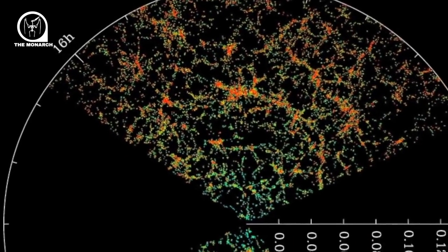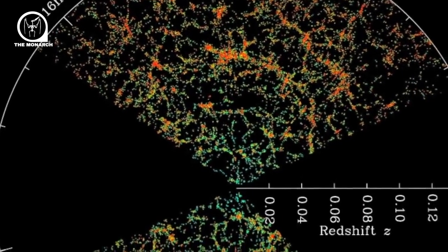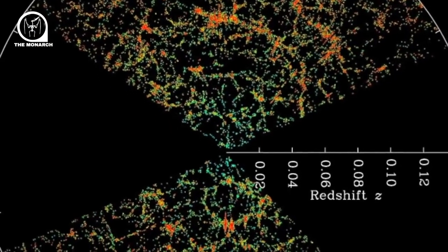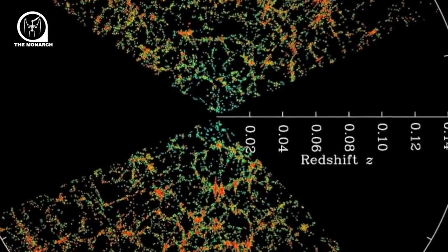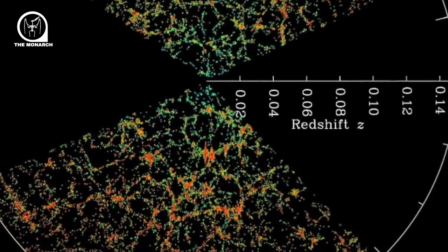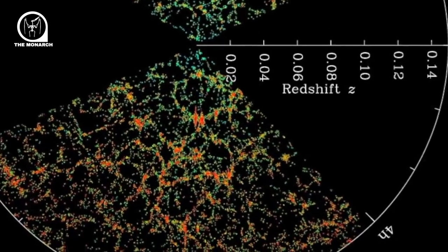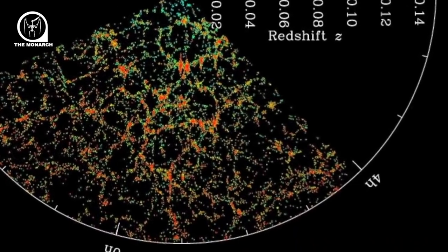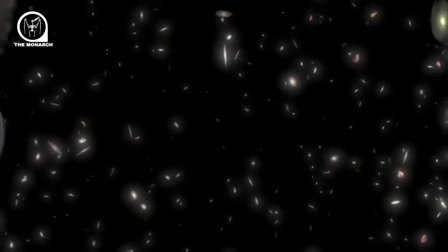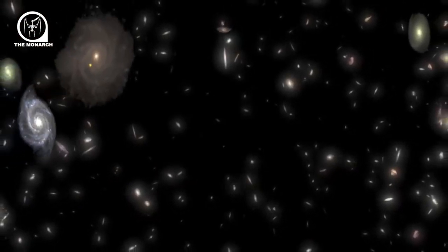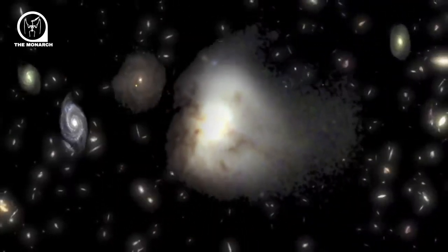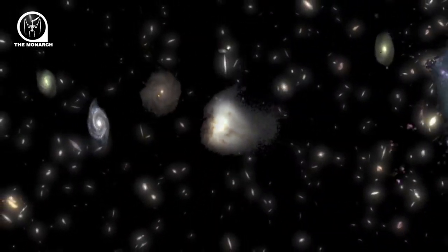Einstein's general theory of relativity suggested that galaxies could be moving apart because space itself is expanding. So when a photon gets blasted out from a distant star, it moves through a cosmic landscape that is getting larger and larger, increasing the distance it must travel to reach us.